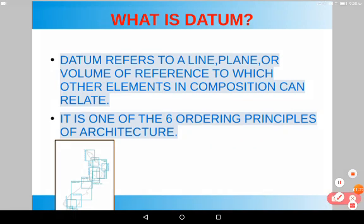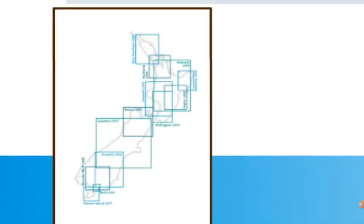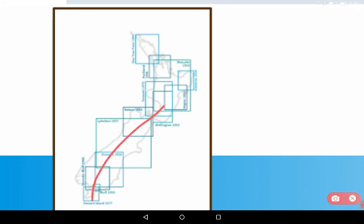This is an example of how architects use datum. You can see how the buildings are arranged through a datum line. All things related to the specific region are concentrated to this datum line. There are six ordering principles in architecture: axis, symmetry, hierarchy, datum, rhythm, repetition, and transformation. We can have a datum volume or datum plane. Here in this figure, we can see the datum line.